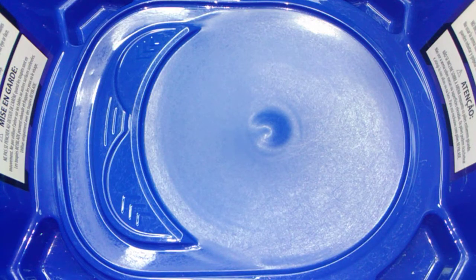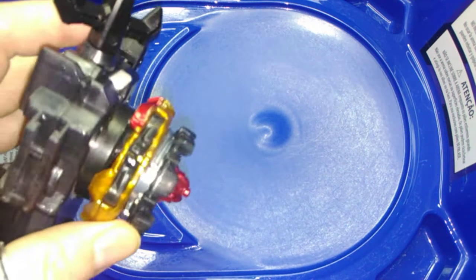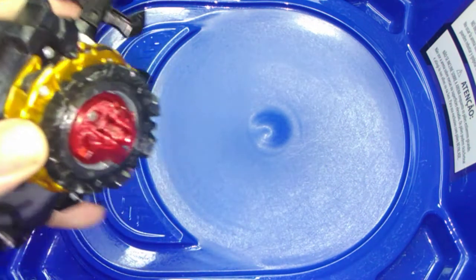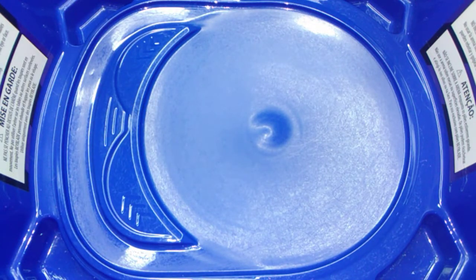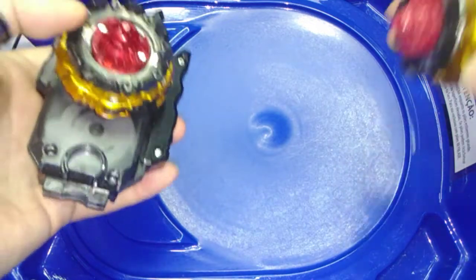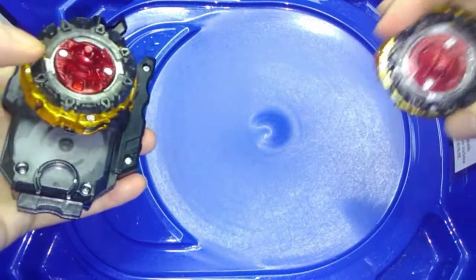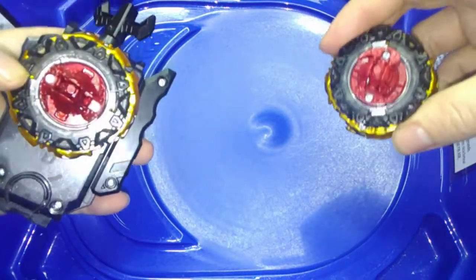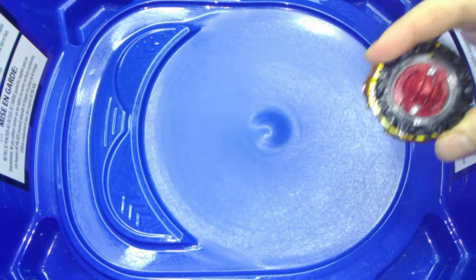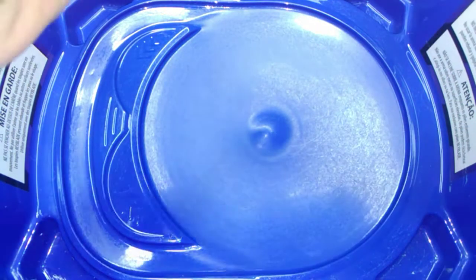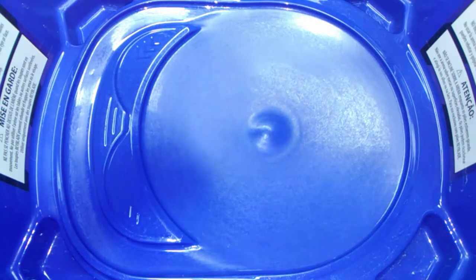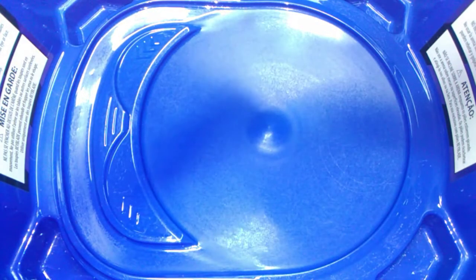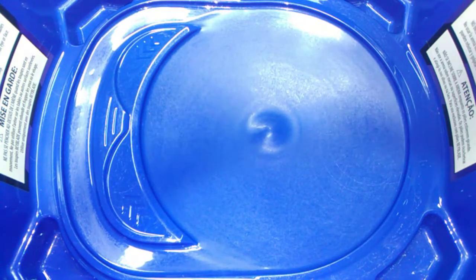Okay, second half of this match, Cho-Z Spriggan taking out that first half, and then we've got a stadium change now, as well as a spin direction change to left rotating, and we're starting back off in stamina mode with both bays. So let's see if Turbo Sprizen can get a victory here on his home turf. I'm going to launch Cho-Z Spriggan first this time, and three, two, one, let it rip or go shoot.